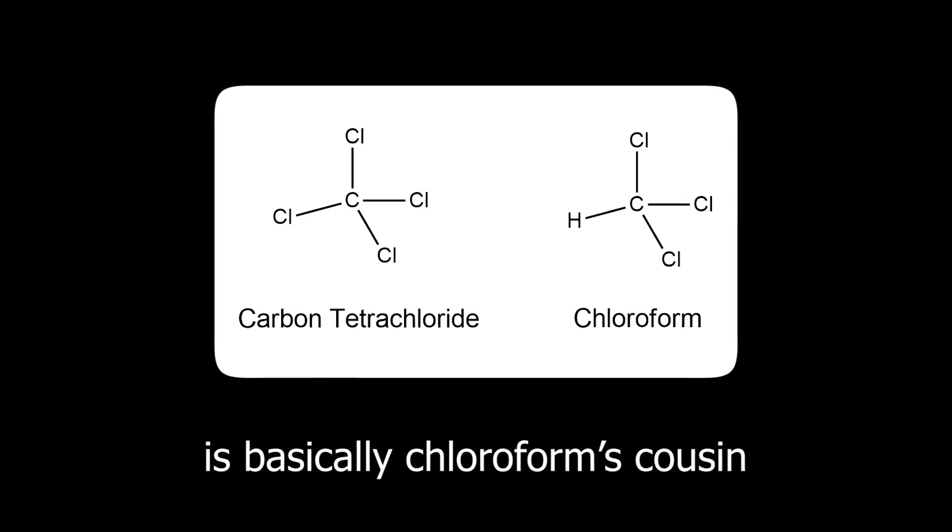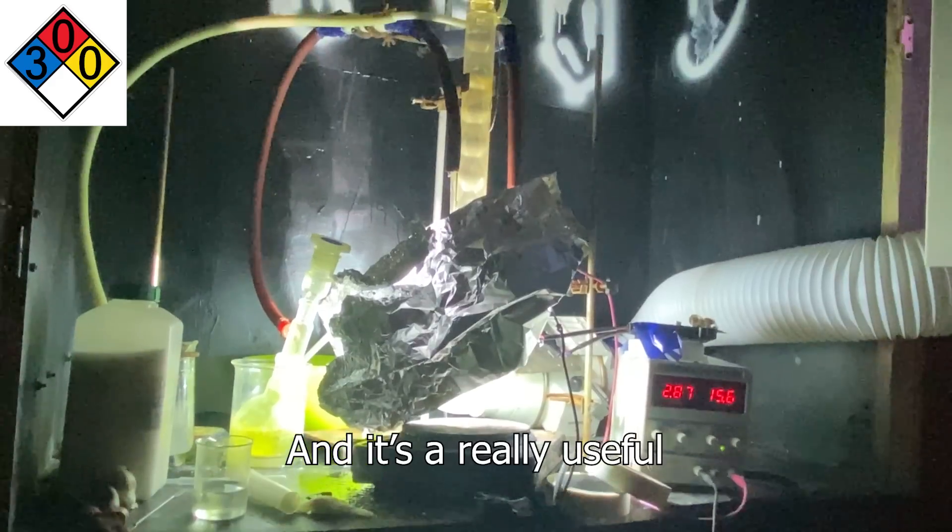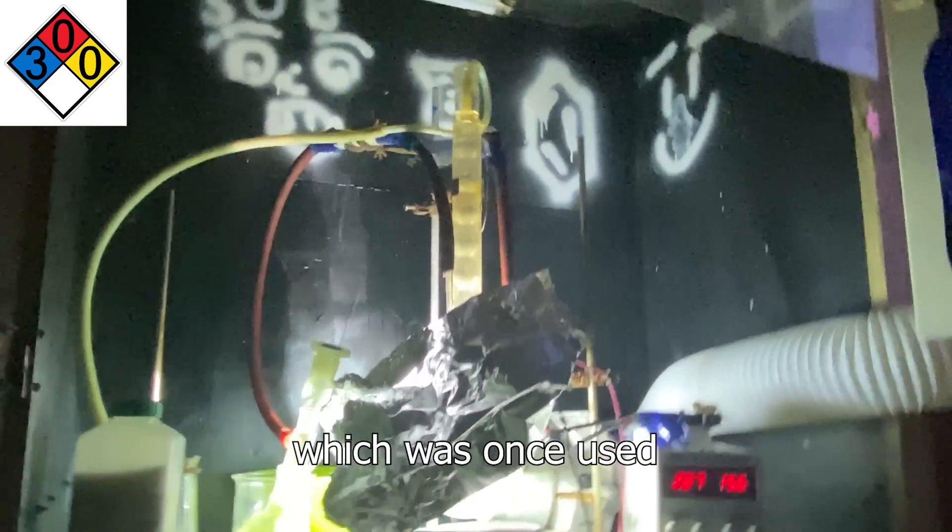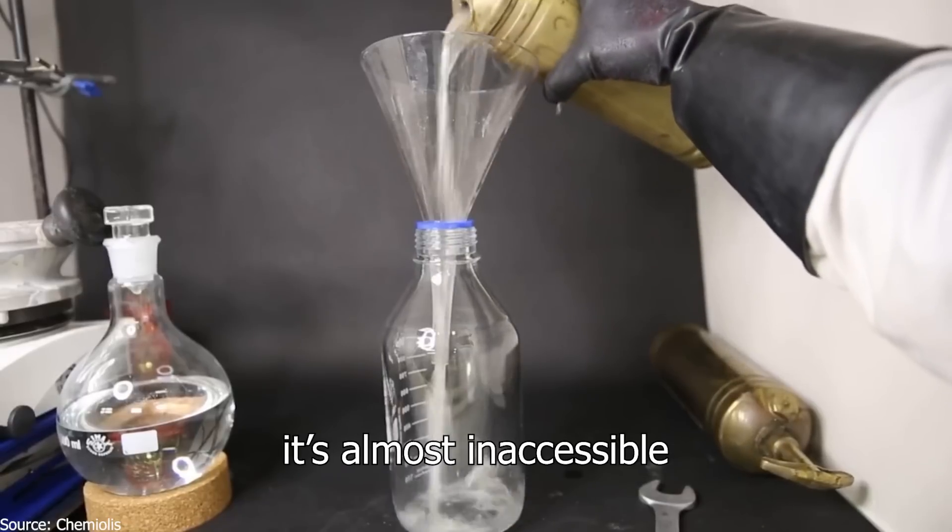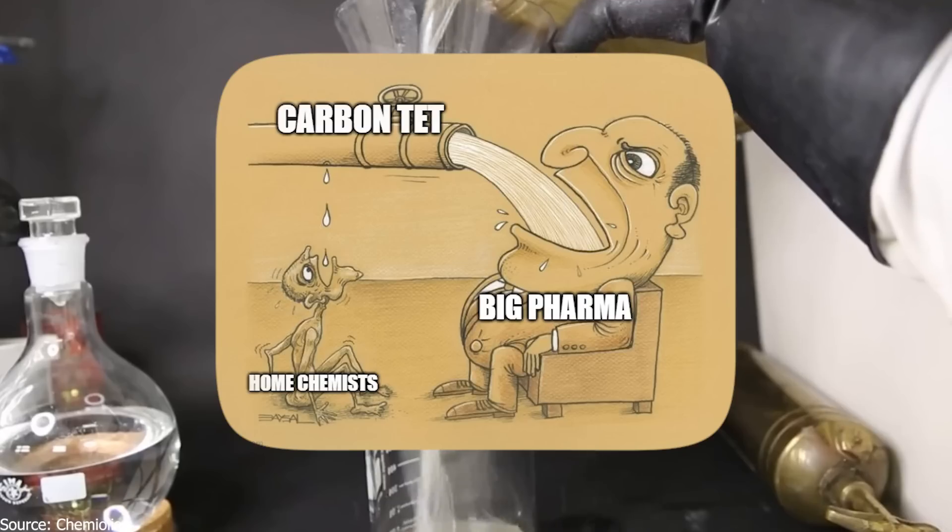Carbon tetrachloride is basically chloroform's cousin, but one chlorine higher. It's a really useful but very carcinogenic solvent which was once used in fire extinguishers, but nowadays it's almost inaccessible to the everyday person, which is just sad.